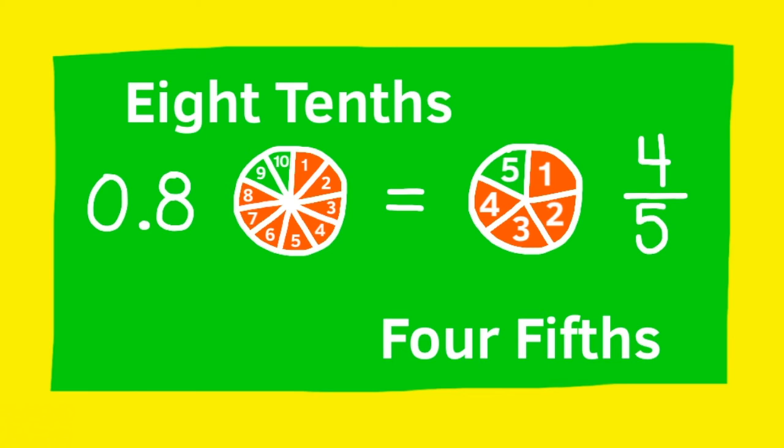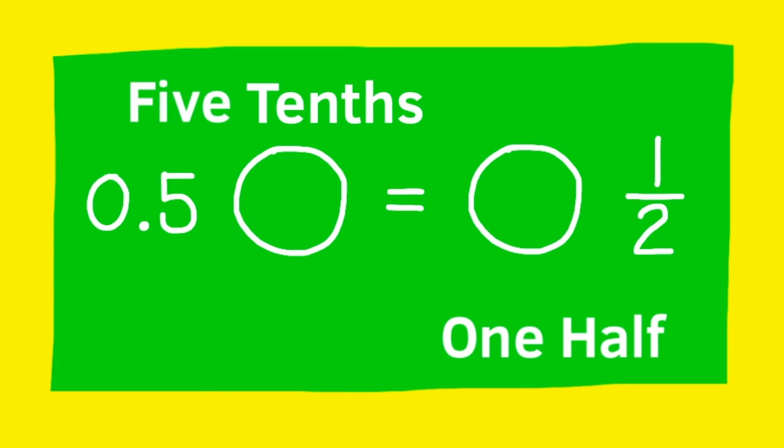Let's illustrate another one comparing 5 tenths with 1 half. Look on the right side, and we have 1 half represented. Look on the left side, and we have 5 tenths represented. You can tell it's the same amount of pizza, but the pizza on the right is just cut into 2 giant pieces, and the pizza on the left is cut into 10 smaller pieces. 5 tenths is equivalent to 1 half.